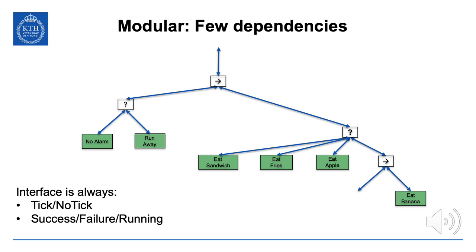Furthermore, open banana can be replaced by a little subtree with two fallback options: either you break the banana open, which is most common, or you cut the banana open with a knife. If either of those succeed, you can go on and eat the banana. If both fail, it's very hard to eat the banana without opening it somehow. You can add detail at any part of the tree without having to worry about dependencies.